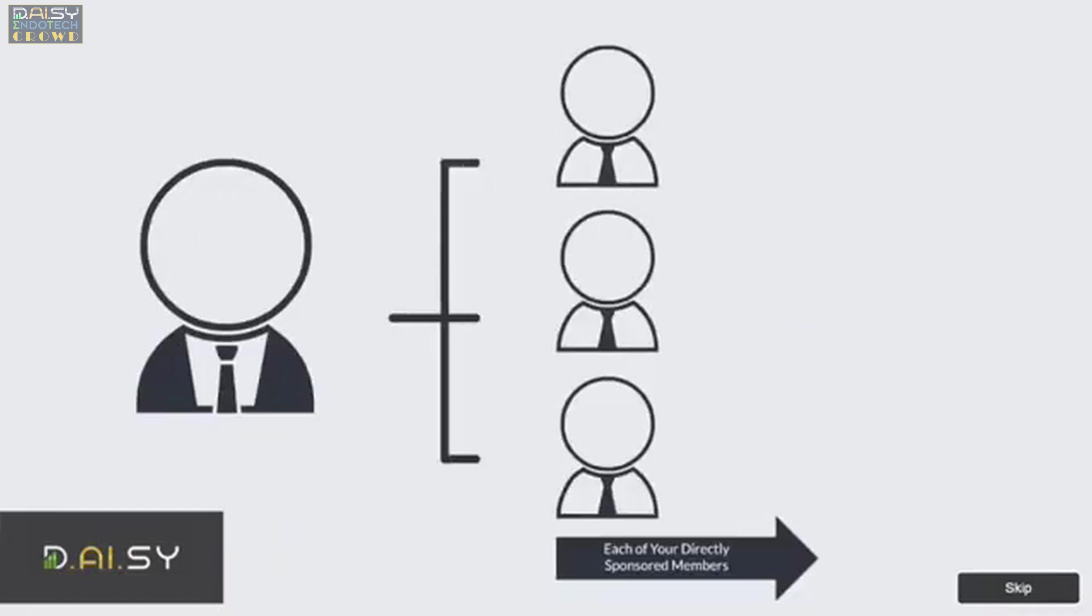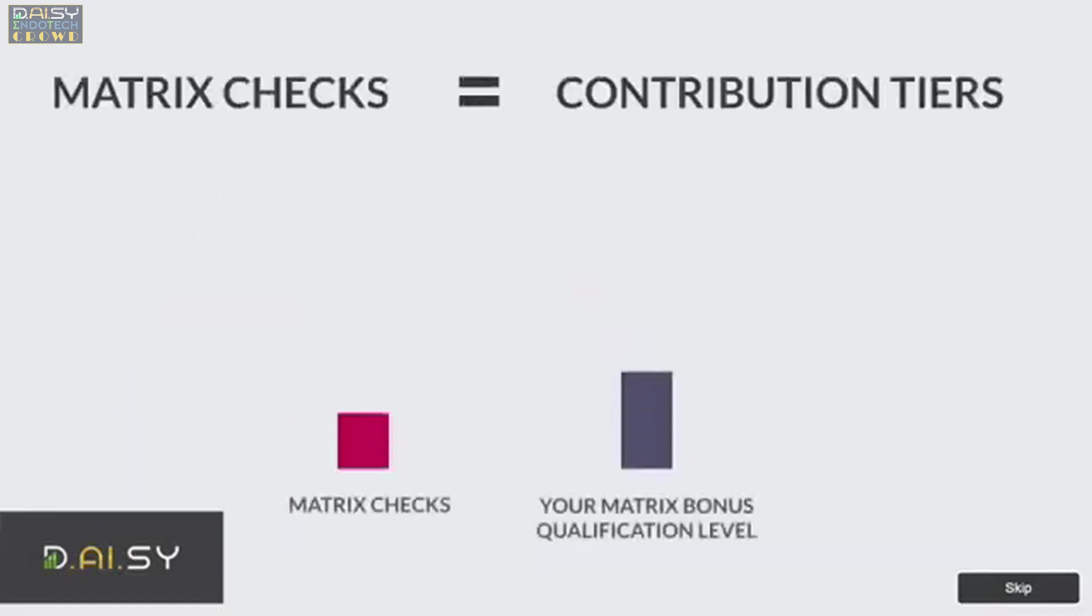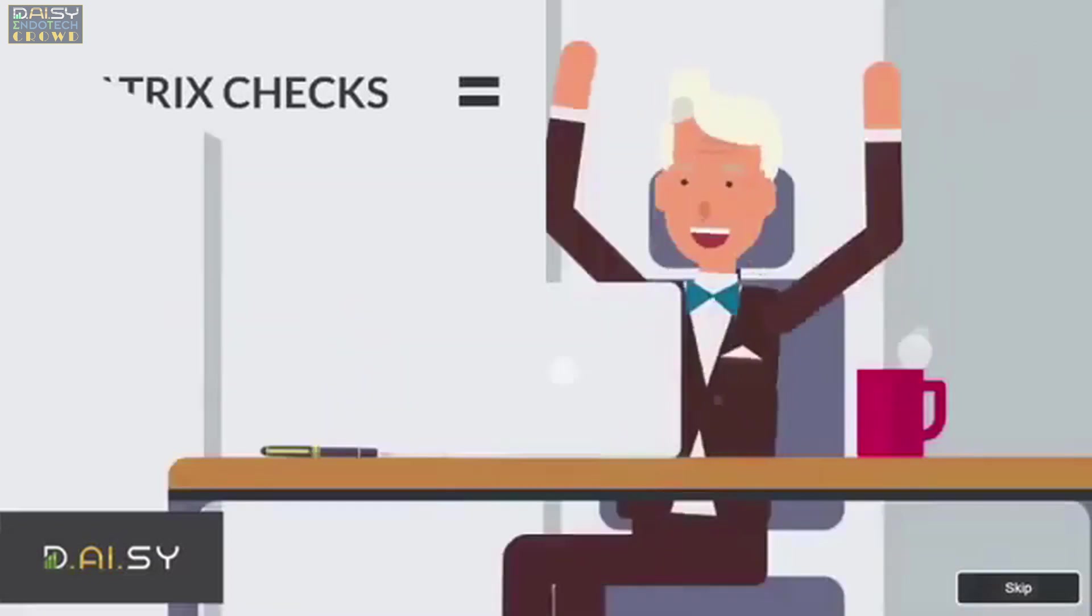Matrix check matching bonus: this bonus rewards you 10% from the matrix bonus of each of your directly sponsored members. You can only match matrix checks from contribution tiers not higher than yours, and your matrix bonus qualification level determines how many levels of matrix bonus from your personals you will match.